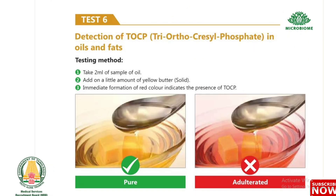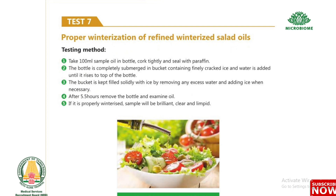Test 6: Detection of TOCP (tri-ortho-cresyl phosphate) in oils and fats. Take 2 ml of sample oil and add a little amount of yellow butter (solid). Immediate formation of red color indicates the presence of TOCP.